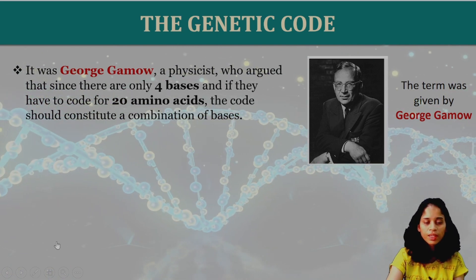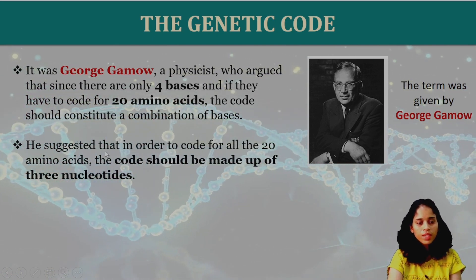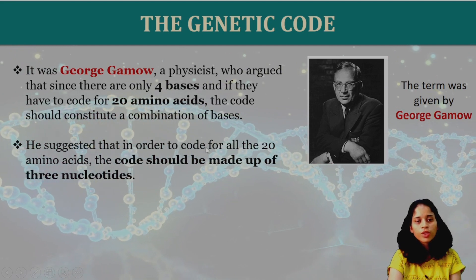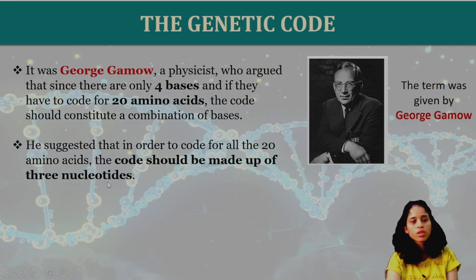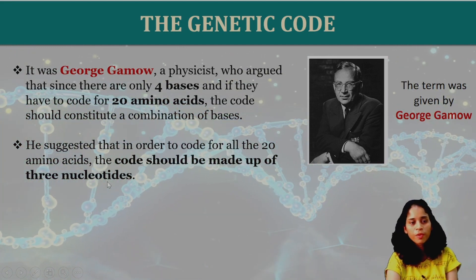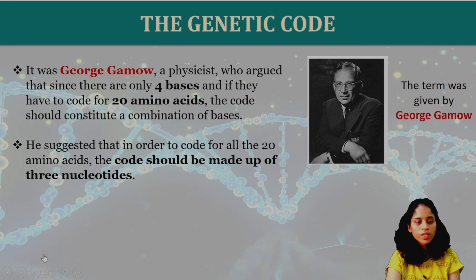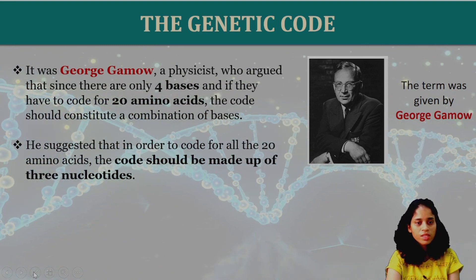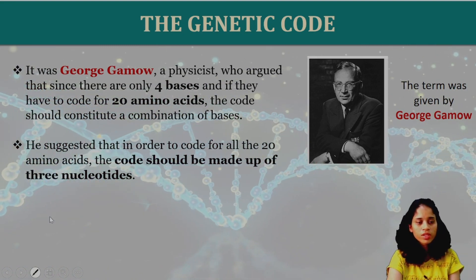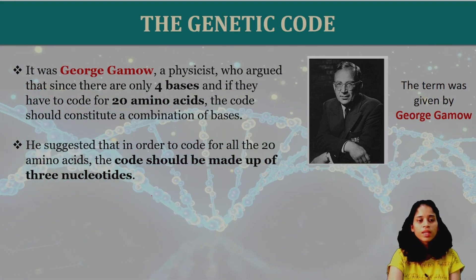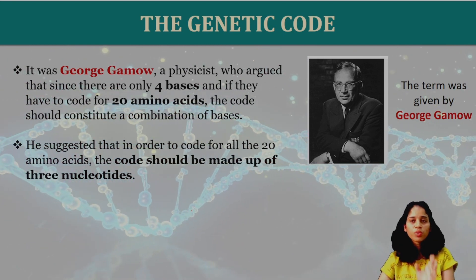He suggested that in order to code for all 20 amino acids, the code should be made up of 3 nucleotides — a triplet codon — to account for all 20 different amino acids.